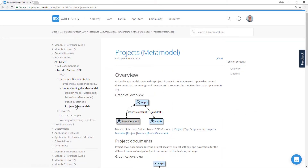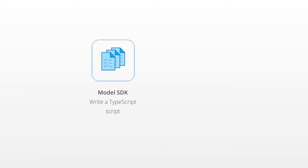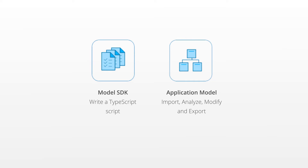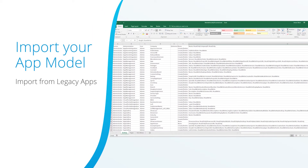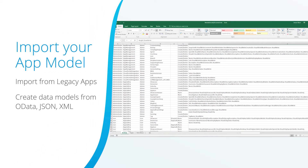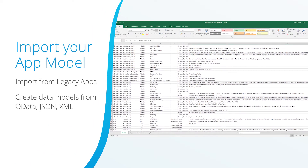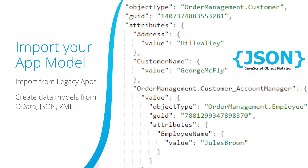So what can you use the Model SDK for? You can write a script which can import, analyze, modify, and export all from your application model. Import data from legacy applications such as Excel or Lotus Notes. Create data models from OData, JSON, XML, or other data definitions.